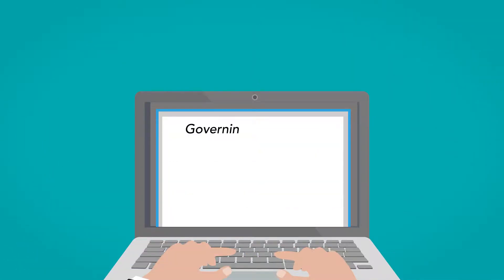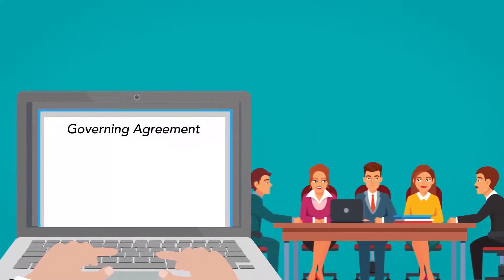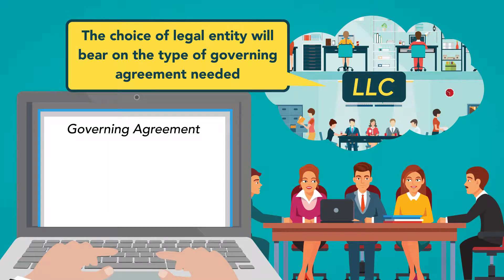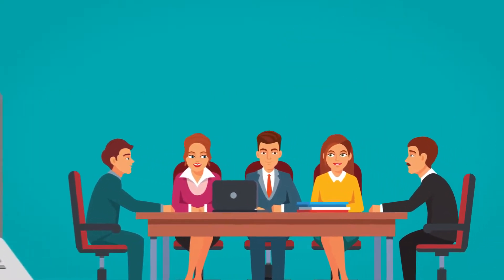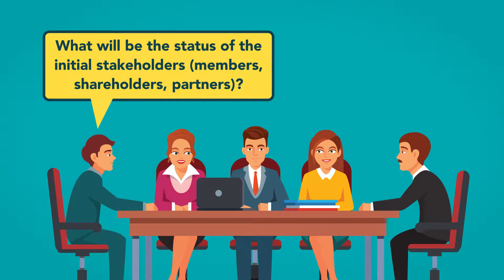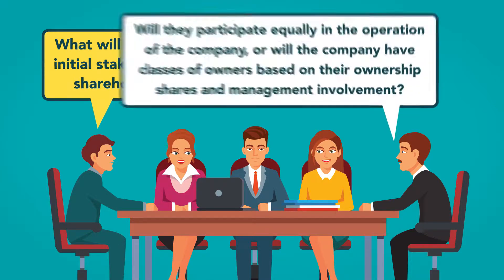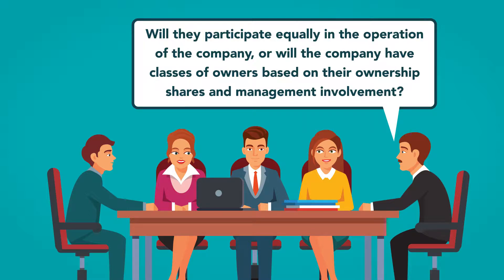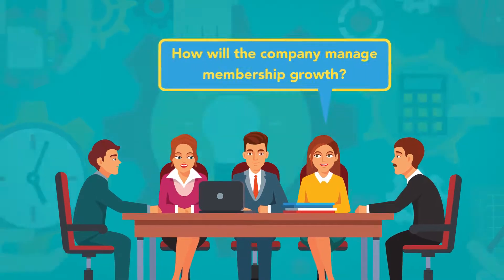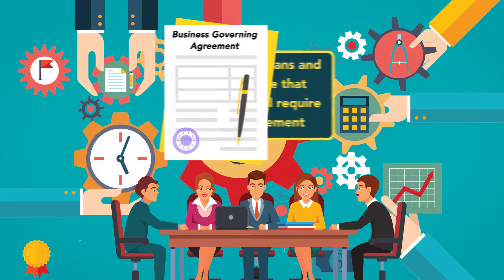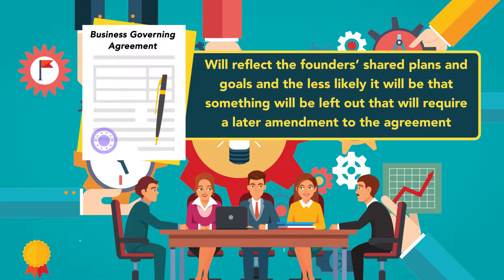Before beginning the process of writing the governing agreement, it's a good idea for everyone involved in running the business to agree on a common vision for the enterprise. The choice of legal entity will bear on the type of governing agreement needed—bylaws, operating agreement, or partnership agreement. Once the form of the business has been chosen, the company can focus on important details: what will be the status of the initial stakeholders—members, shareholders, or partners? Will they participate equally in the operation? Will the company have classes of owners based on ownership shares and management involvement? Should the agreement define the roles of managers and officers? How will the company manage membership growth? The more that's agreed to in advance, the more likely the governing agreement will reflect the founders' shared plans and goals.